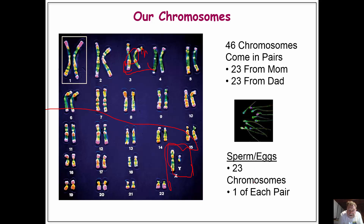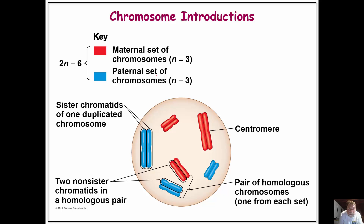23 chromosomes come from your mom and 23 come from your dad. The sperm and eggs each have one of these sets — one chromosome number 1, one chromosome number 2, one number 3, one number 4 — and basically it's a 50-50 chance whether you get one chromosome or another. We're looking at maternal chromosomes and paternal chromosomes: two large chromosomes, two medium chromosomes, and two small chromosomes. These are what we call homologous pairs.